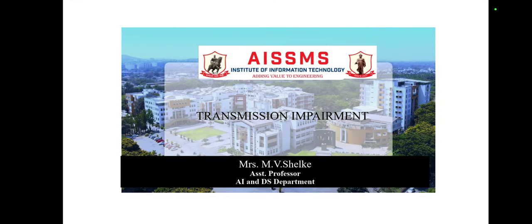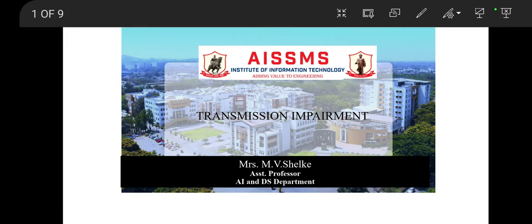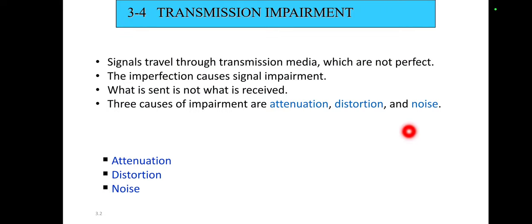In this video we'll see the concept of transmission impairment. Signals travel through transmission media which are not perfect, and this causes signal impairment — meaning the signal at the beginning of the medium is not the same as the signal at the end of the medium. That is called transmission impairment. There are three causes of impairment: first is attenuation, second is distortion, and third is noise.